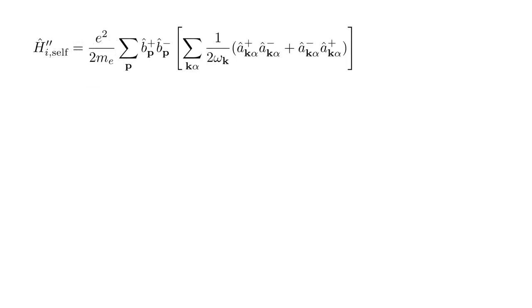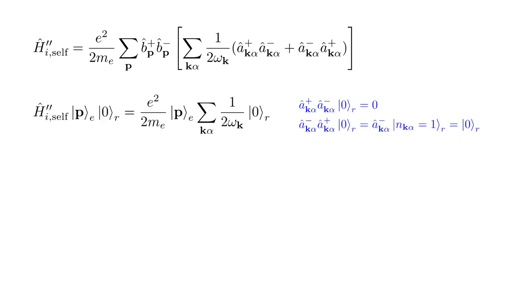Let's call the result the h-hat i-double-prime self-operator. When this operates on our quantum state, the product of b-hat operators destroys and recreates the electron in momentum state p. The first product of a-hat operators tries to destroy a photon, but the vacuum state contains no photons, so this produces nothing. Our problem is that the second product of a-hat operators creates and then destroys a photon in the k-alpha state, which takes us back to the vacuum state. So we end up with a sum over all photon states of one over two omega k, times the vacuum state.